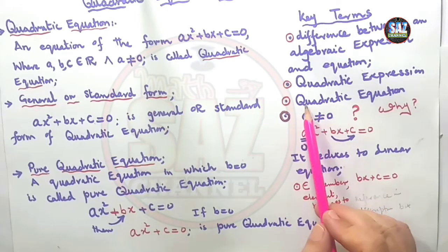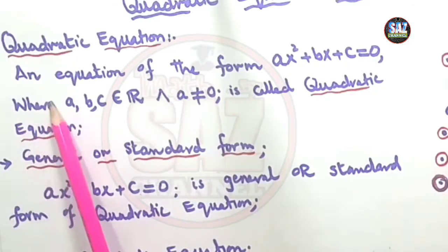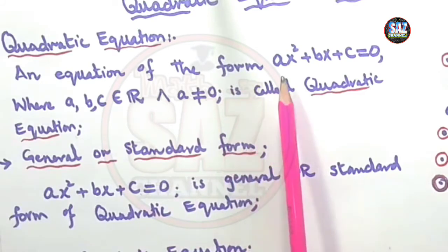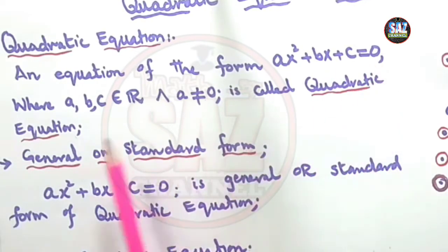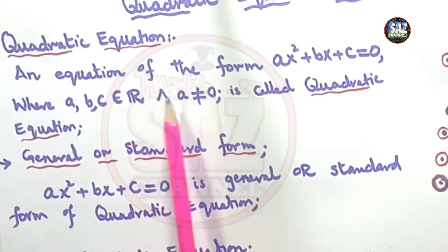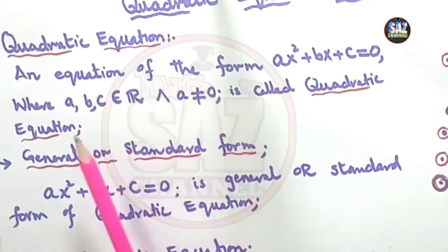Then the next concept is the quadratic equation. Let's move to quadratic equation: an equation of the form ax²+bx+c=0, where a, b, c are real numbers and a should not be equal to 0, is called the quadratic equation.